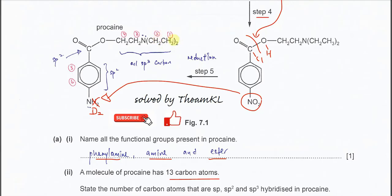Even though there are two ethyl groups, they are equivalent and still give two signals. There is another signal from the adjacent CH₂ proton. The four aromatic carbons each have one proton — this proton and that proton give another signal, and the other aromatic pair gives another signal. Therefore, the total is six signals or six peaks observed in the proton NMR.